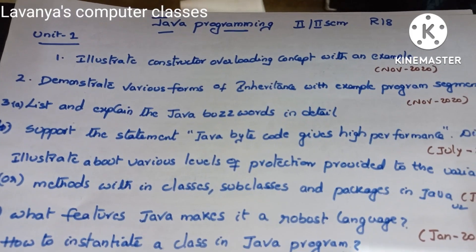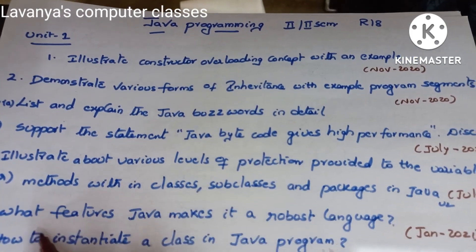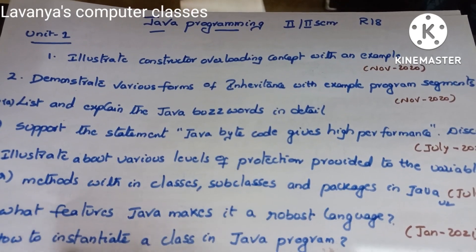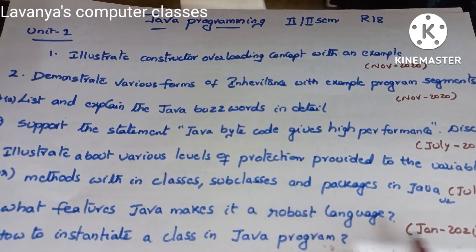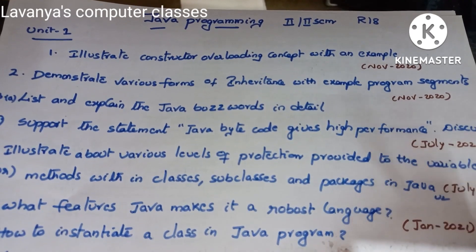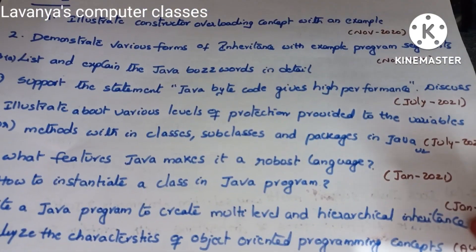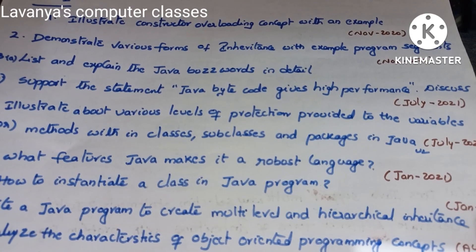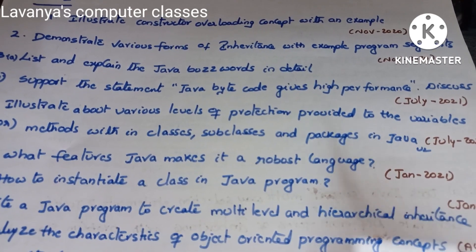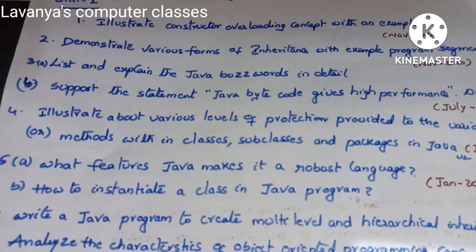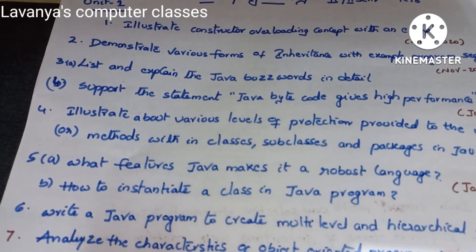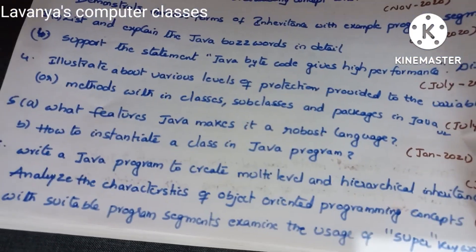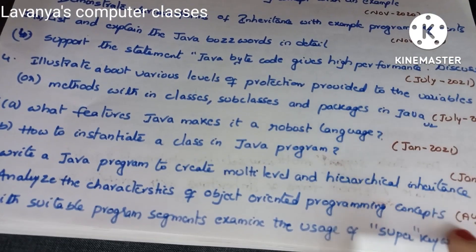Next, 'What features make Java a robust language and how to instantiate a class in a Java program' — from January 2021. Then, 'Write a Java program to create multi-level and hierarchical inheritance' — from January 2021. Inheritance is a very important concept in unit one. Next, 'Analyze the characteristics of object-oriented programming concepts' — a fundamental OOP question from August 2020.